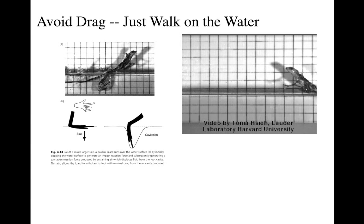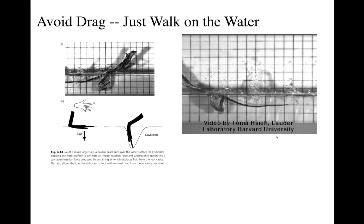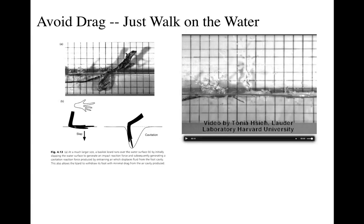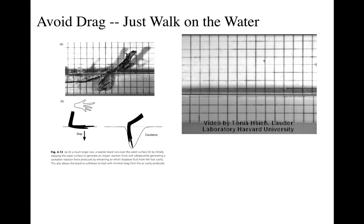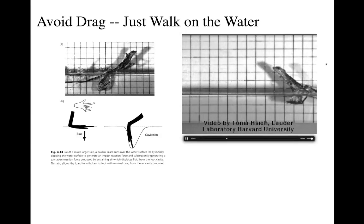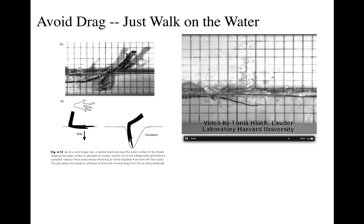Here's some really cool locomotor modes. Here is the basilisk running on water — the lizard slaps its foot on the surface of the water and causes a cavitation bubble, and before the bubble collapses and sticks to its foot, the foot is already out of the water again. You can see the bubble and then it goes into the next limb cycle — pretty amazing.